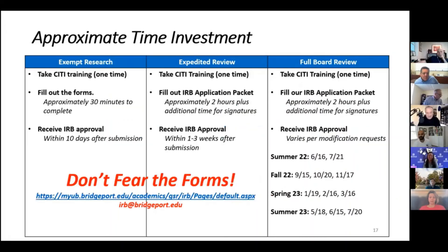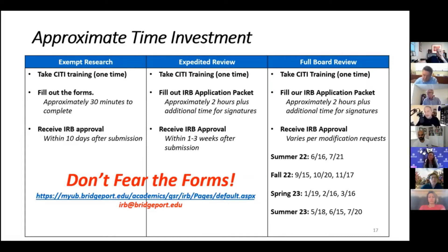You have to take a one-time investment in CITI training — no matter what, you have to do that if you're going to engage the IRB at all. For exempt research, you fill out the forms, which take about 30 minutes to complete, and within 10 days after you submit to the IRB, you will get your feedback. That feedback is not a rubber stamp.